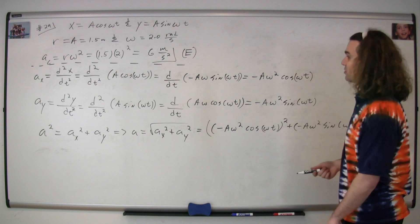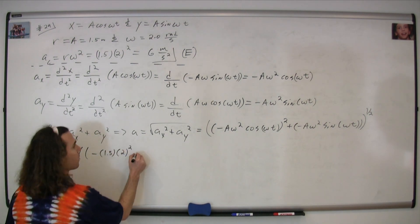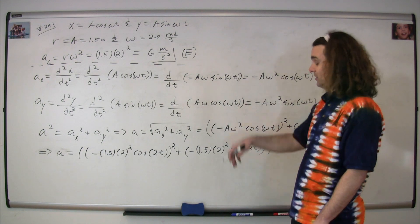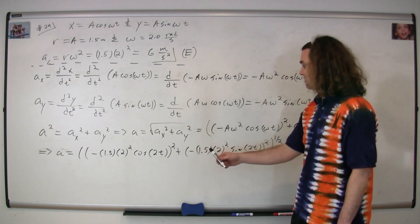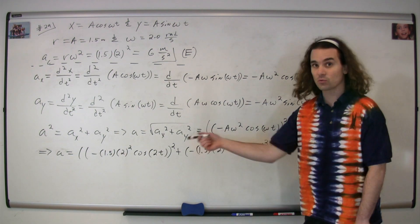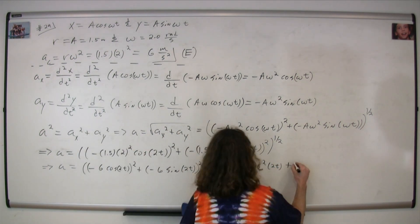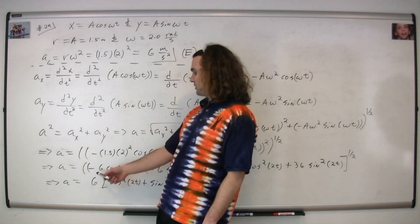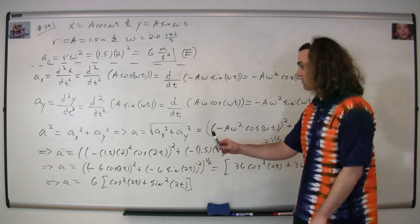Substituting in our values for the acceleration in the x and y directions, we get the square root of: negative 1.5 times 2 squared times cosine(2t), that whole quantity squared, plus negative 1.5 times 2 squared times sine(2t), that whole quantity squared. Taking the square root of the whole thing gives us the acceleration equals the square root of (negative 6·cosine(2t))² plus (negative 6·sine(2t))².